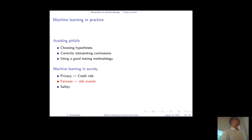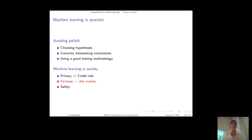The other topic is fairness. We'll go through a social network application where you model a social network with a job market — people have skills, employers have requirements, and people get matched. You'd like a fair process, such as maintaining gender equality. But what does that mean if the employer itself doesn't have gender equality? These are the kinds of questions we explore.